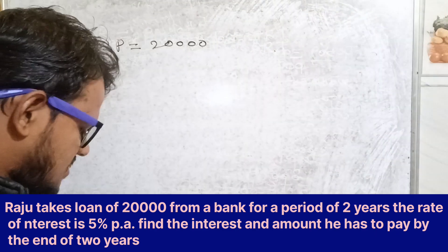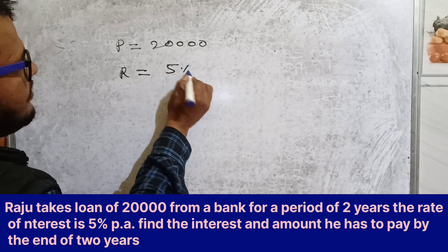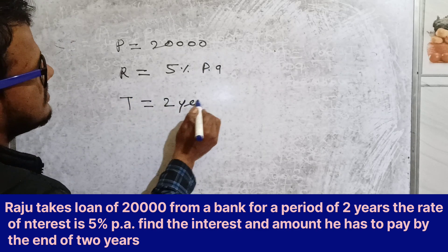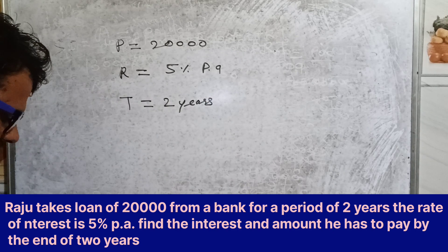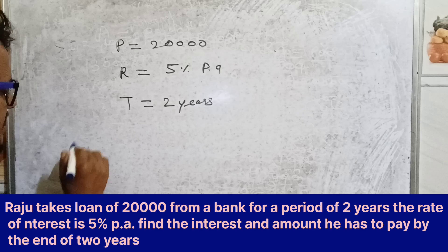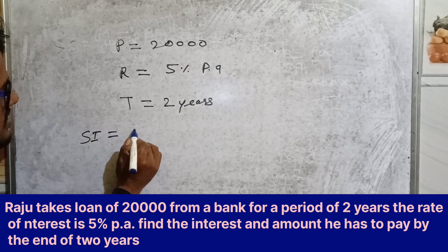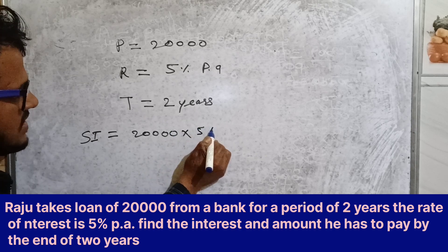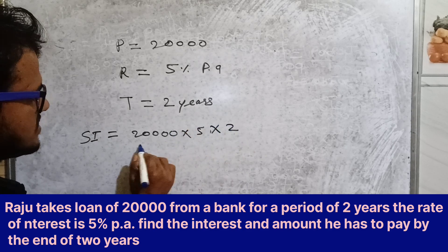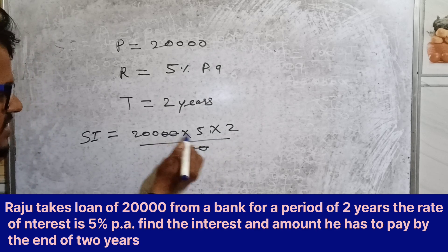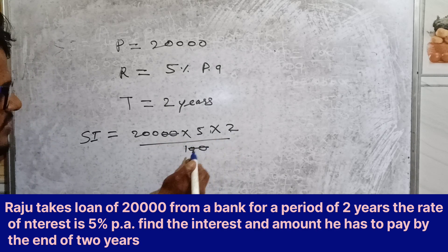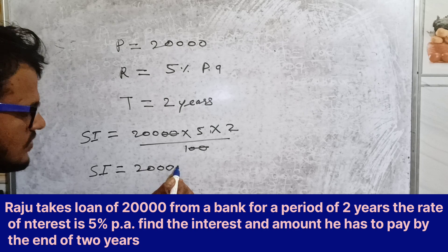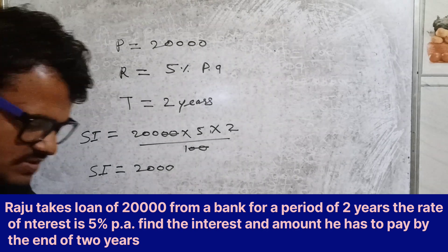The rate of interest is given as 5 percent per annum and the time period is two years. We need to find the simple interest. Applying the formula, the double zeros cancel out, 5 into 2 equals 10, and 10 into 200 equals 2,000. So the simple interest is equal to 2,000 rupees.